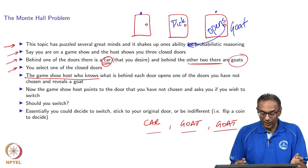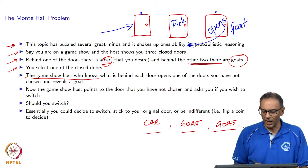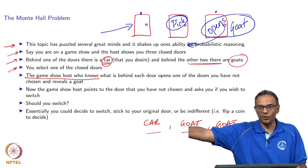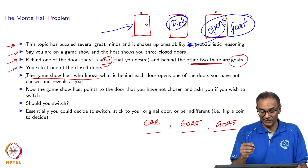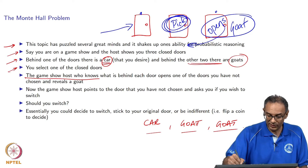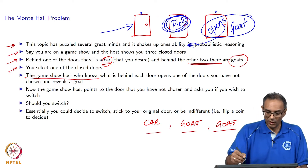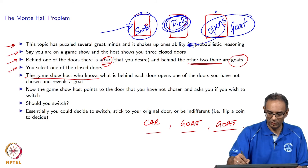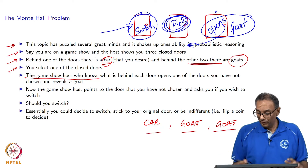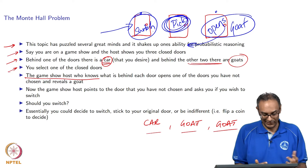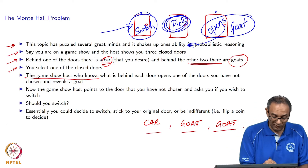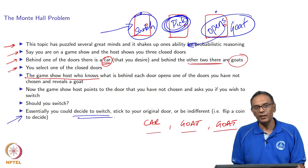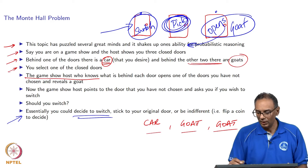Now the game show host points to the door that has not been opened and that has not been selected. Remember, you picked the middle door and the game show host opened the door on the right. Now the game show host asks you the question: do you want to stick to your original choice - the middle door - or switch to the door on the left? Essentially, he wants to ask you: do you want to switch or do you want to stick? From your standpoint, you are looking at one of three situations: switch, stick, or be indifferent.